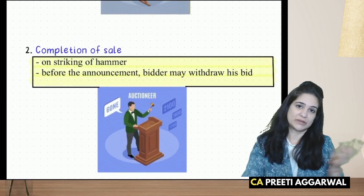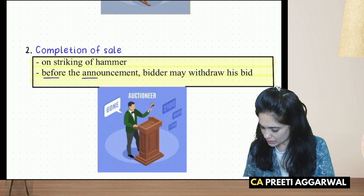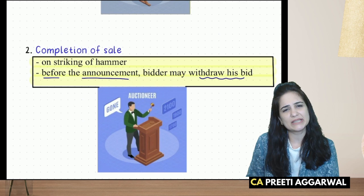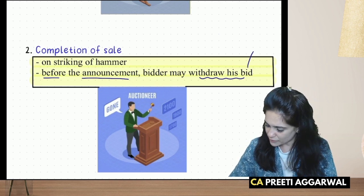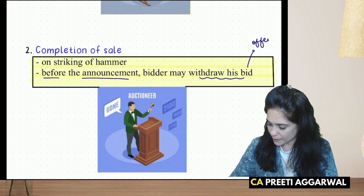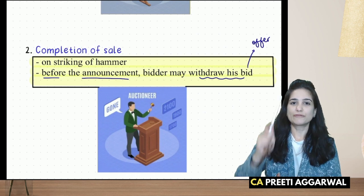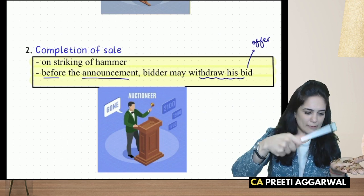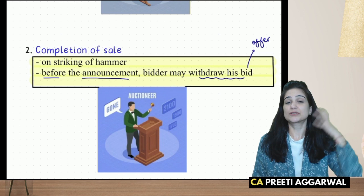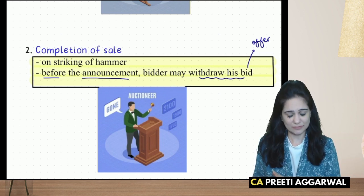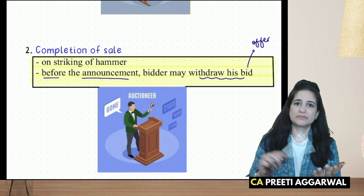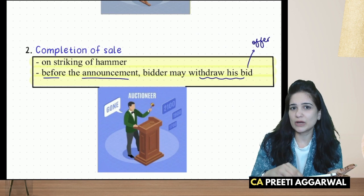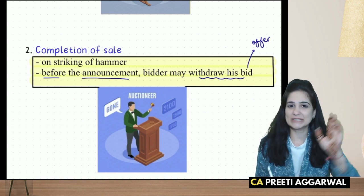Before the announcement of the sale, a bidder may withdraw his bid. Of course, since a bid is just an offer, and we learned in contract law that an offer can be revoked before it is accepted, you can withdraw your bid before the hammer strikes. But once the hammer has struck, you must buy — you cannot say 'I don't have money.' Once the hammer strikes, a contract is formed and you must buy the goods.